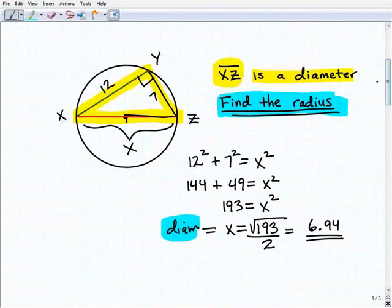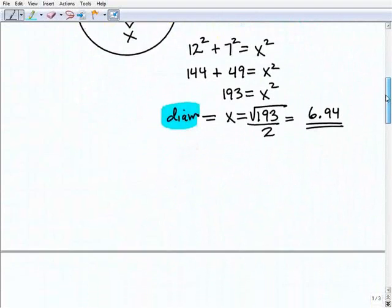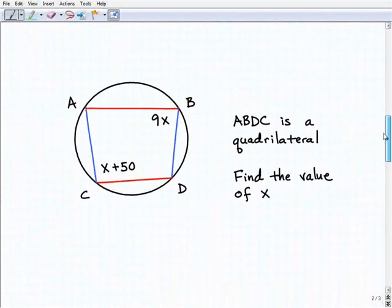Once again, this problem is not difficult once you can apply these theorems that we learned. The whole key here was knowing that this particular inscribed angle was a right angle. That was a theorem that we learned from the lesson. Let's take a look at our second problem.